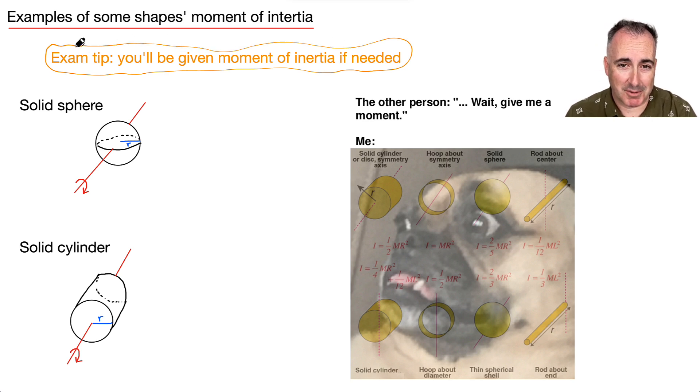And I love this one right here because this one says the other person says wait, give me a moment. And then someone's like flashbacks, like oh my God, moment of inertia. And in fact, let's use this. We've actually got two of them right here if we need them.